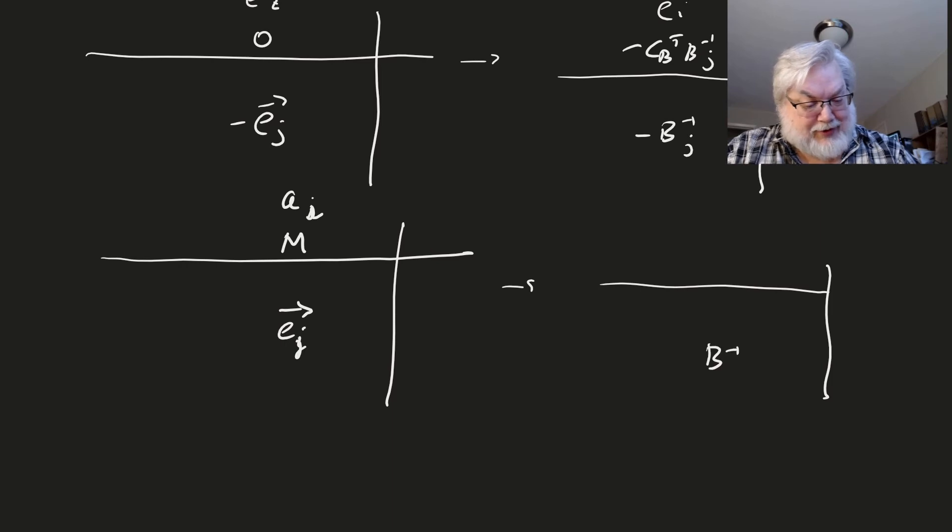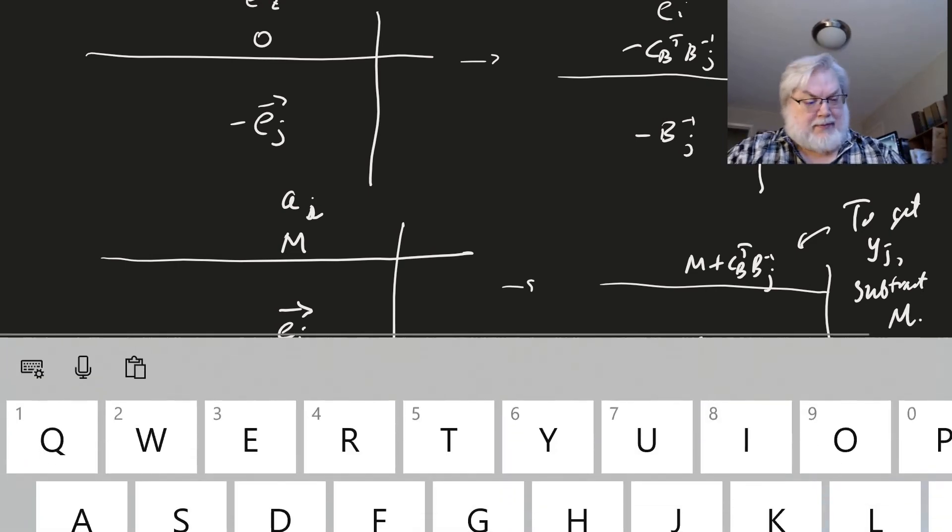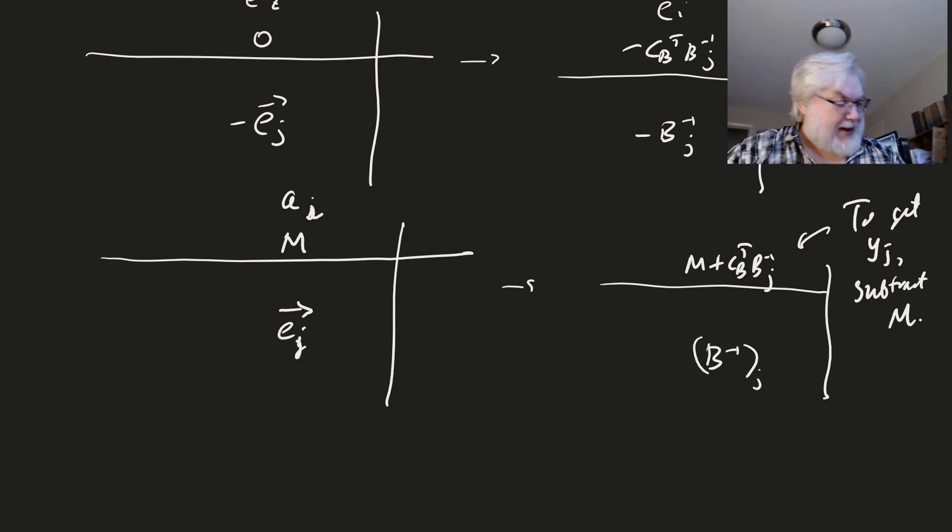Well, this is still going to be the J-th column of B inverse, but up here it's going to be M plus CB transpose B inverse J, right? And so to get YJ subtract M. Good. I don't know why that came up. Okay. So those were the three cases in the book.